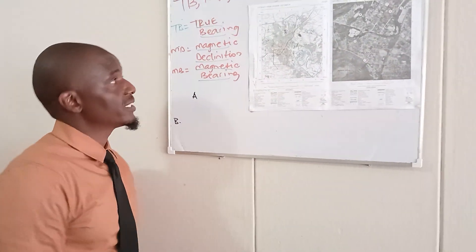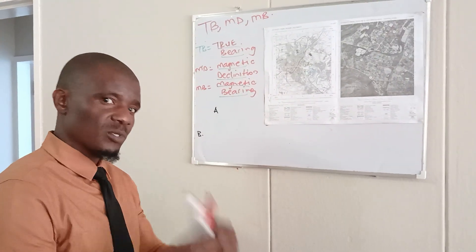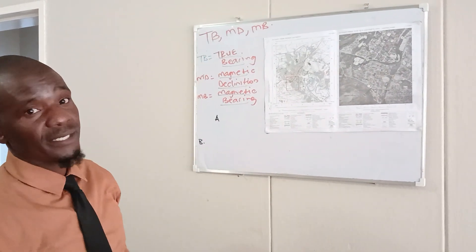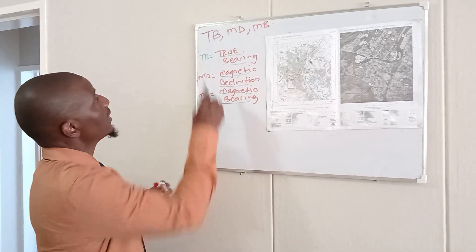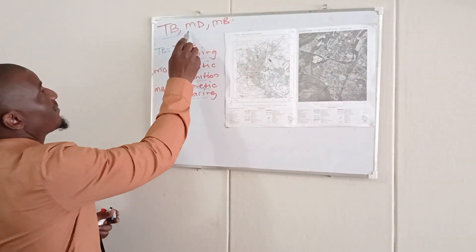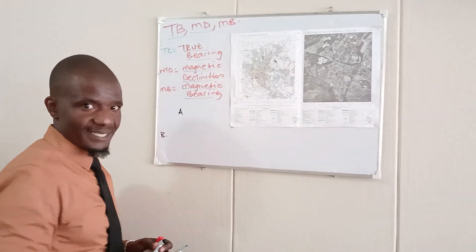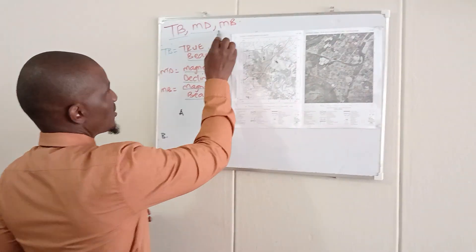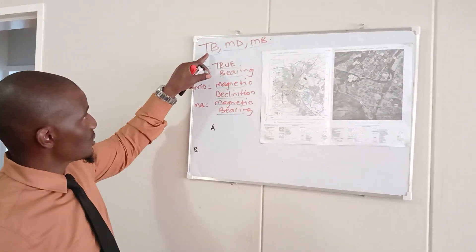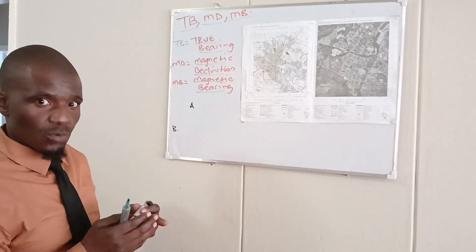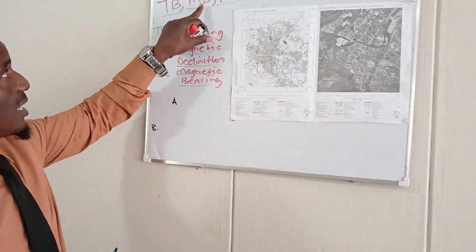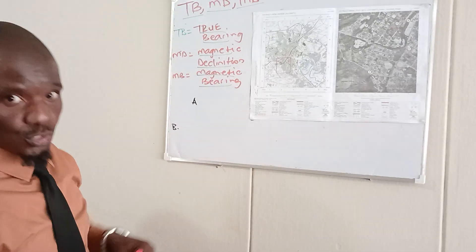Good afternoon. Another calculation on your map point that is very important is how you calculate your true bearing, which is TB, not tuberculosis, but true bearing. You've got your MD, which is your magnetic declination, and then you've got your MB, which is your magnetic bearing. These three concepts work hand in hand — there's no way you can calculate your MB without your MD and your true bearing.